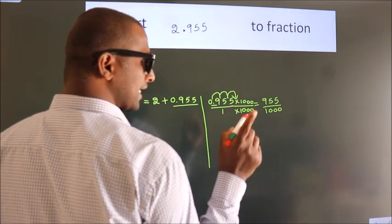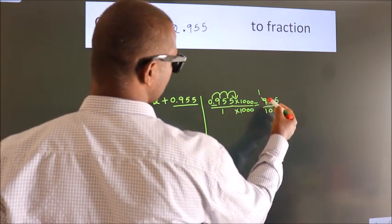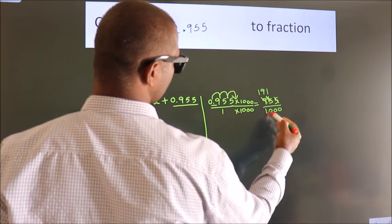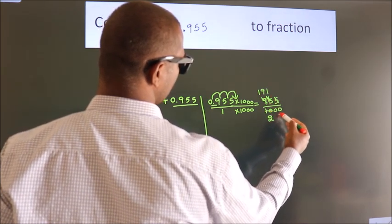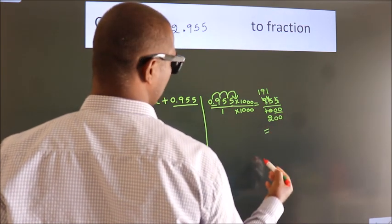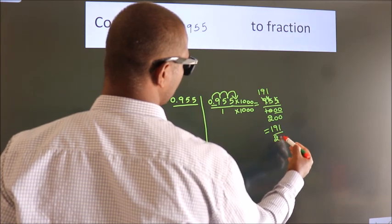Now I cancel with 5. 5 ones, 5 nines, 5 ones, 5 twos. These zeros as it is down. So the fraction we got is 191 by 200.